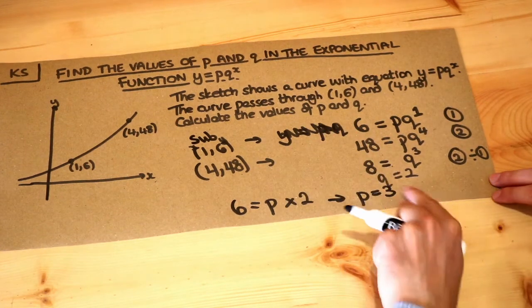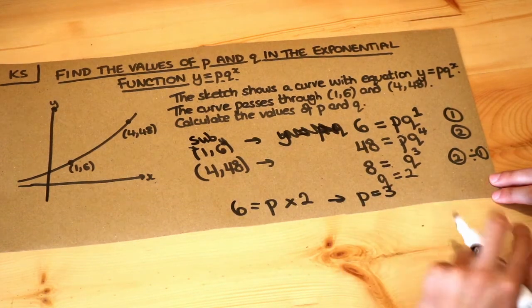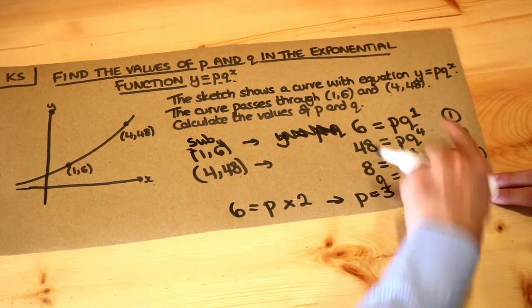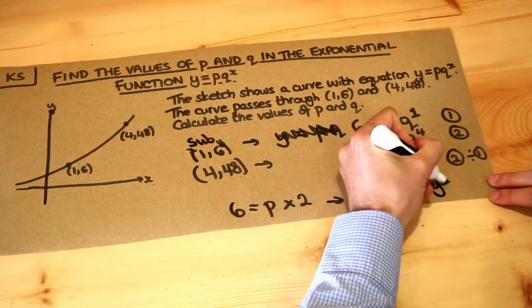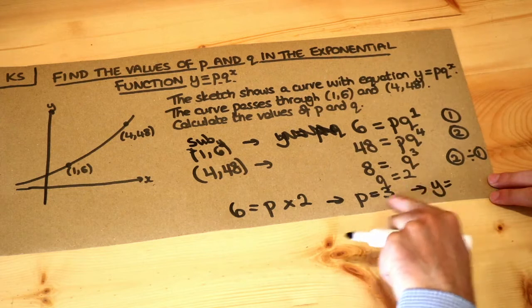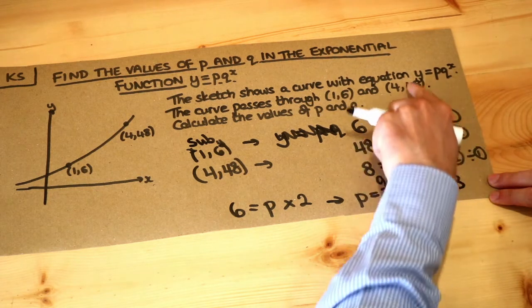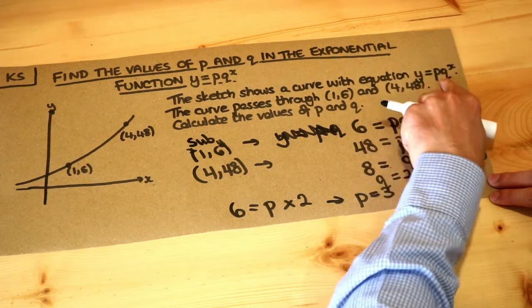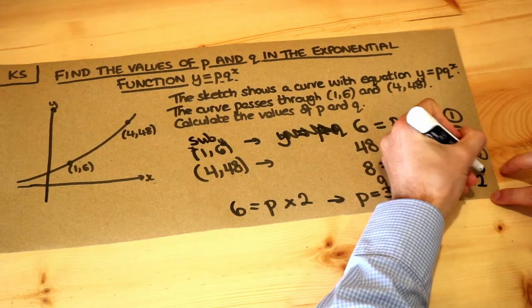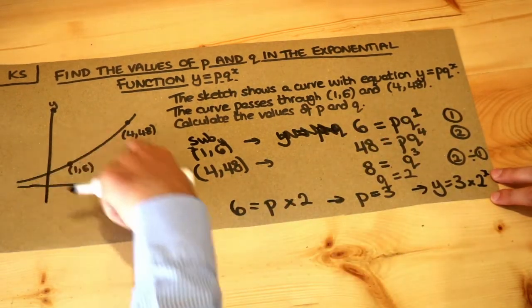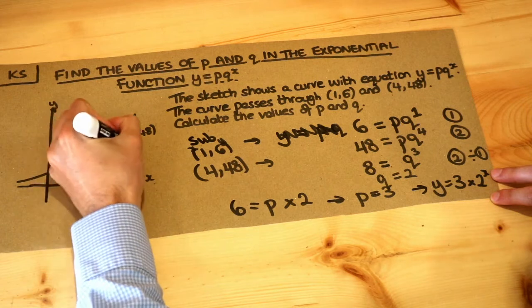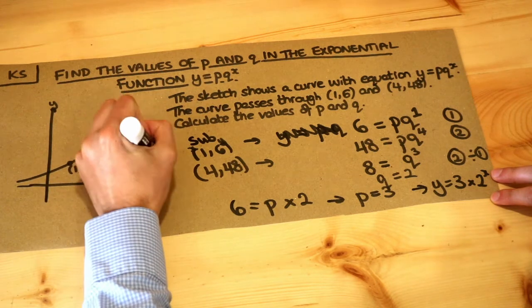And that's our final solution. We know that q is 2 and p is 3, which means the final equation of our curve is y equals p, which is 3, times q, which is 2, to the power of x. So the equation of this curve is y equals 3 times 2 to the power of x.